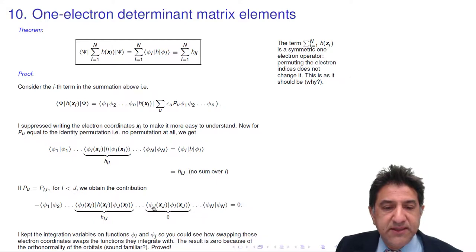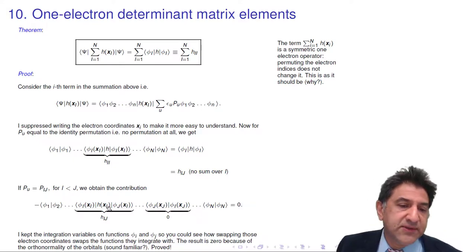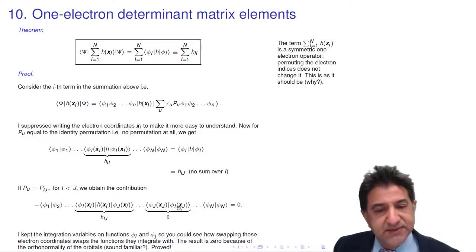This is phi i x j on the right. OK, we integrate that. But wait, it's phi j with phi i. So this is zero by orthogonality. So yes, this part isn't zero, but this part is zero.